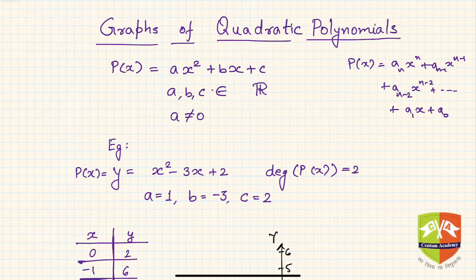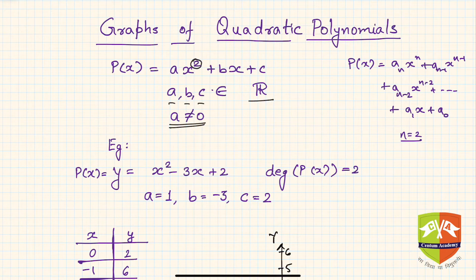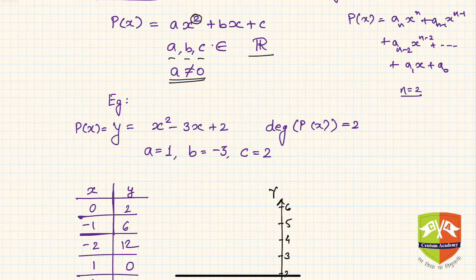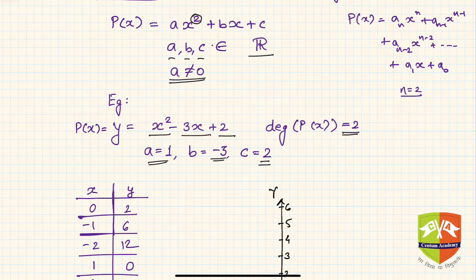If n is equal to 2, then we know the polynomial is called a quadratic polynomial. The degree here is 2, so this is a quadratic polynomial where a, b, c are real numbers and a cannot be 0 — because if a becomes 0 then this polynomial will be reduced to a linear polynomial. For example, p(x) = x² − 3x + 2, where degree is 2, a = 1, b = −3, and c = 2. Note that b is −3, so the sign is always included.